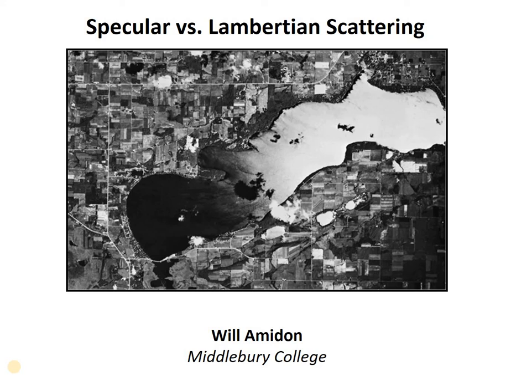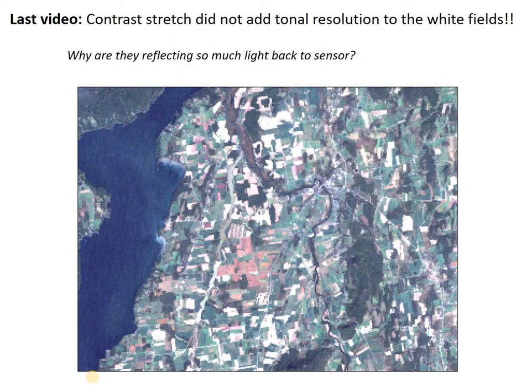Hello my friends and welcome to this video on specular versus Lambertian scattering. In the last video we set up this problem: we have these farm fields in Vermont and we want to know which ones have bare soil and which ones are covered with vegetation. But some of these farm fields are white in a true color rendering because they're so bright that even a contrast stretch couldn't reveal any tonal resolution. So we still don't know whether they're vegetated or whether they have soil — and one thing to think about is why are they reflecting so much light back to the sensor?